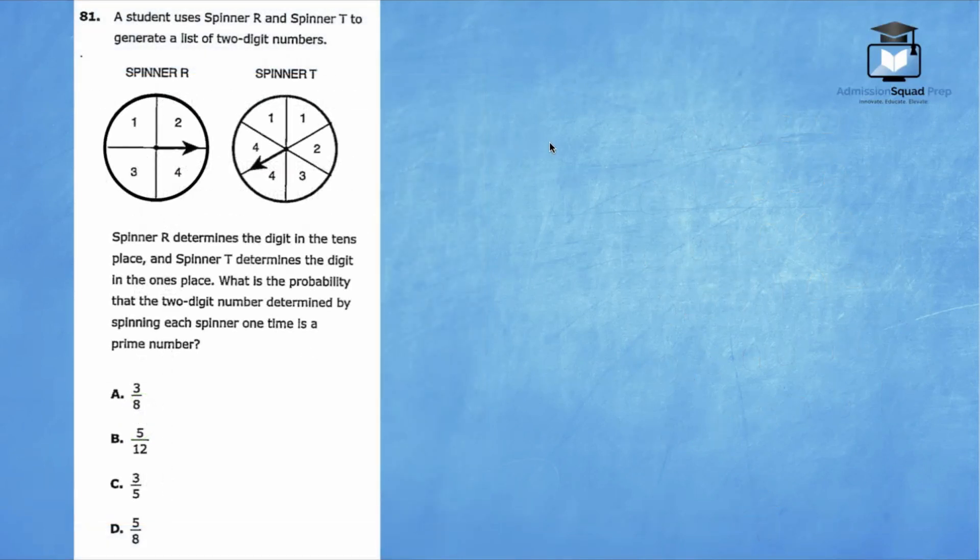For 81, a student uses spinner R and spinner T to generate a list of two-digit numbers. Spinner R determines the digit in the tens place, and spinner T determines the digit in the ones place. What is the probability that the two-digit number determined by spinning each spinner one time is a prime number? We can use the counting principle to solve this problem. The counting principle would have us consider the possibilities in spinner R, which is 4, times the possibilities in spinner T, which is 6. So 4 times 6 is 24 total possibilities.